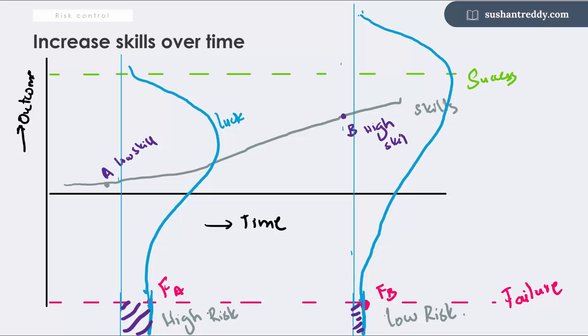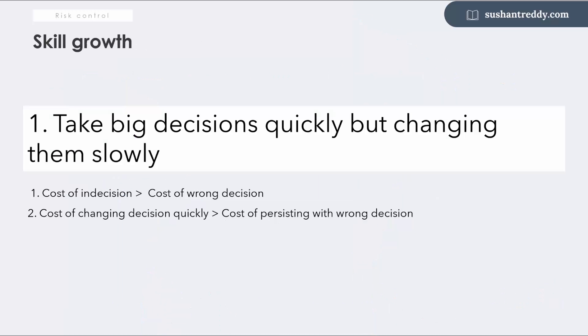So the top three things on my list that help in improving skills: Number one, take big decisions quickly but change those decisions slowly. Major decisions on what to do, who to work with, which industry to target should happen quickly. I found that the cost of waiting to make a big decision is usually much higher than the cost of making a wrong decision. Once you lock in a major decision, you define your boundary conditions within which you build your skills. Once these decisions are made, changing your vision or industry or team quickly can lead to stunted growth in skills. Once a big decision is made, the cost of switching that decision quickly is much higher than the cost of persisting with the wrong decision.